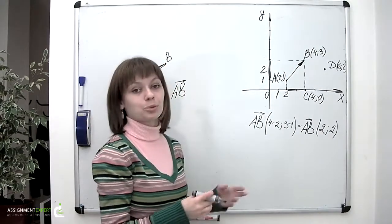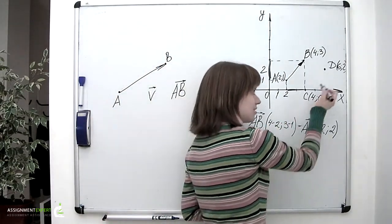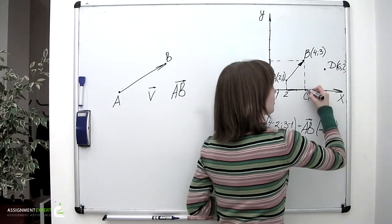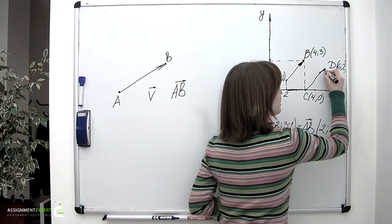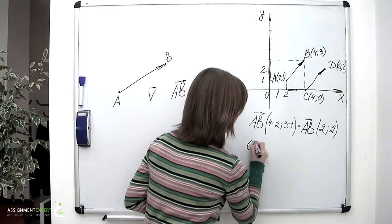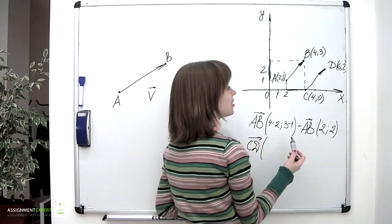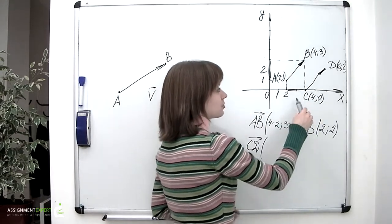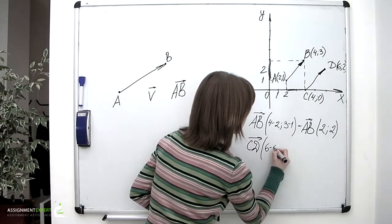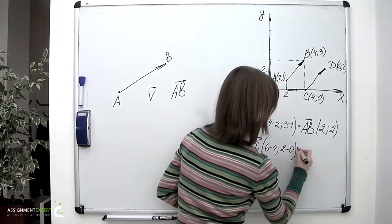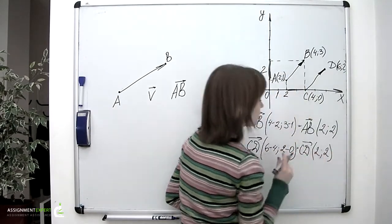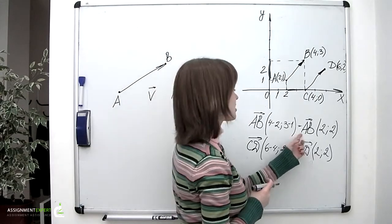Let's go through it one more time. We have points C and D, with C having coordinates (4, 0) and D having coordinates (6, 2). We connect them and obtain vector CD. We subtract the corresponding coordinates of the initial point from those of the terminal point: 6−4 and 2−0, so the coordinates of vector CD are 2 and 2 as well — just as vector AB.